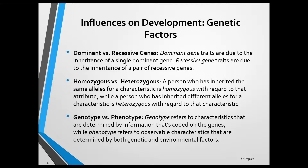Other traits are the result of a single pair of genes that contains a dominant gene or two recessive genes. When a trait is due to a dominant gene, a person will exhibit that trait whether he or she inherited the dominant trait from both parents or from only one parent. Traits and disorders that are due to a dominant gene include curly hair, brown eyes, farsightedness, and Huntington's disease.